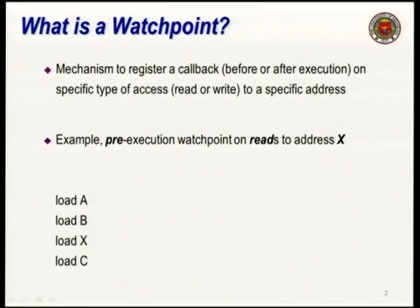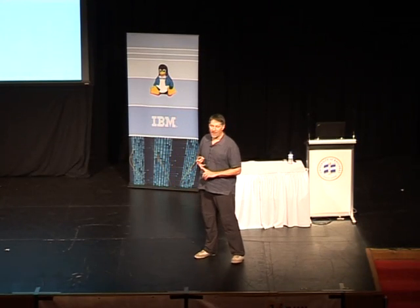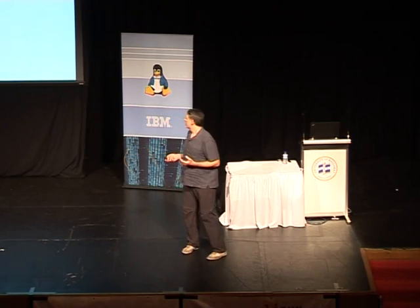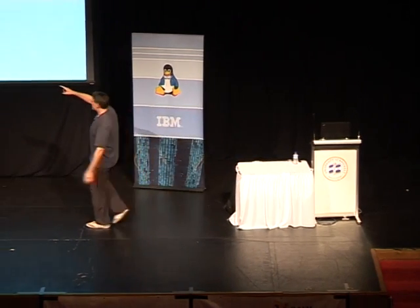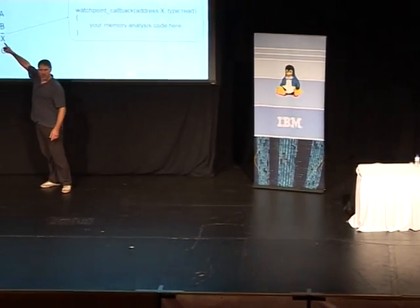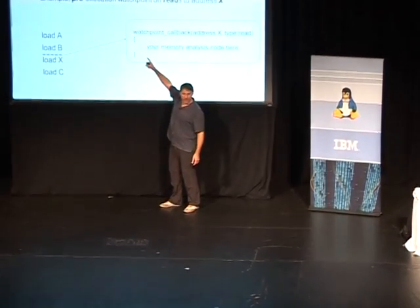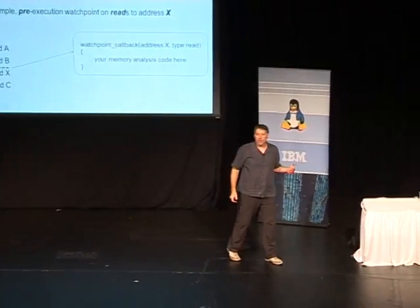So first off, let's talk about what is a watchpoint. A watchpoint is a mechanism — usually at the user level, but in this work we're going to put it at the kernel level, very low level — which allows you to register a callback when anybody accesses a piece of memory. You can specify: do that callback before or after I access the memory, as well as what type of access — read or write or both. For example, if I put a pre-execution watchpoint on reads to address x, when I get to the load x, right before it executes and before it modifies its destination register, I'll make a call out to a function indicating that address x has been touched with this kind of access.